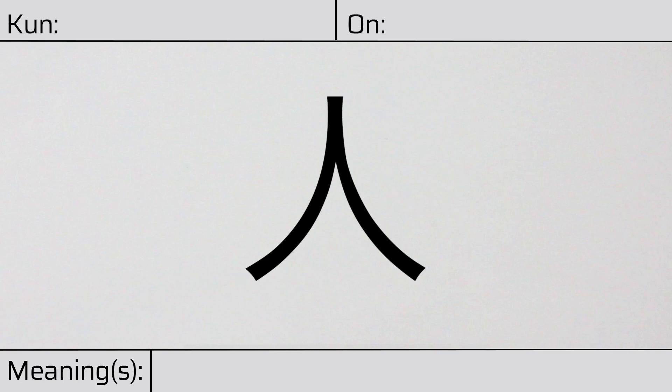Welcome to this lesson on Japanese kanji. Today, we'll be discussing this character. This kanji has kunyomi, or Japanese readings of hito, ri, or to.